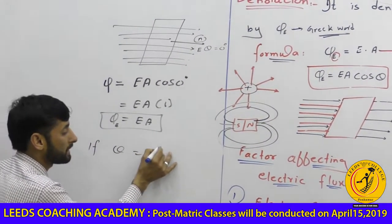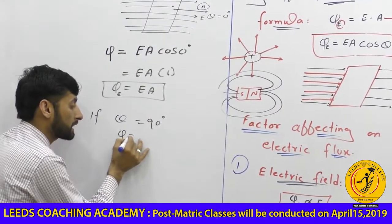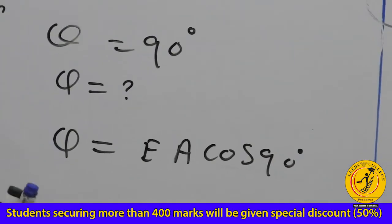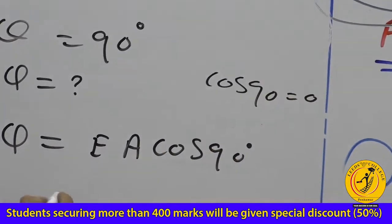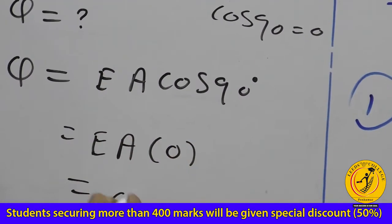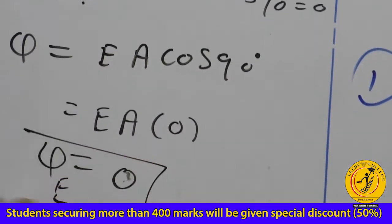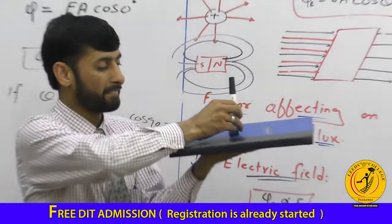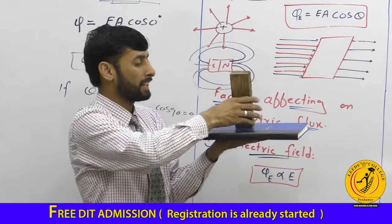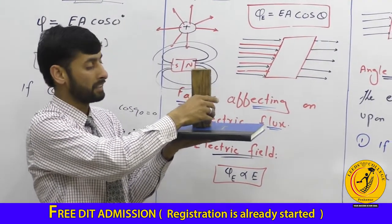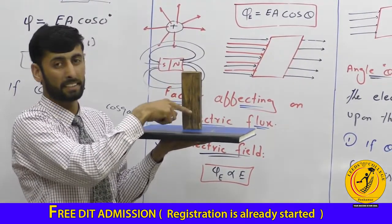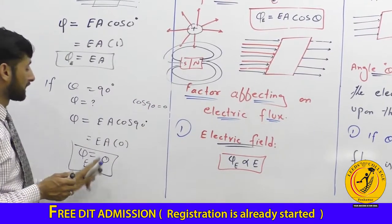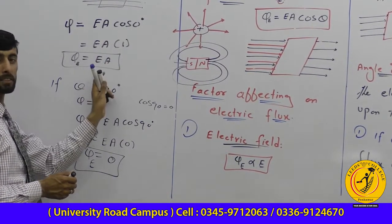If theta is equal to 90 degrees, then electric flux equals E × A × cos(90°). Since cos(90°) = 0, the electric flux equals zero. This is the minimum value. When theta is 90 degrees, the normal vector is perpendicular to the electric field, so no field lines pass through the area and the flux is zero.